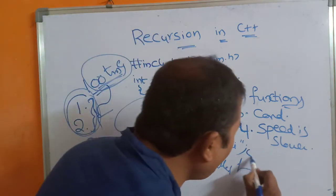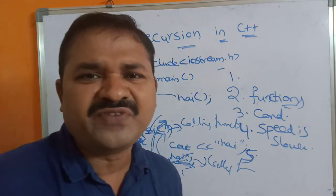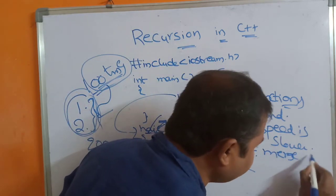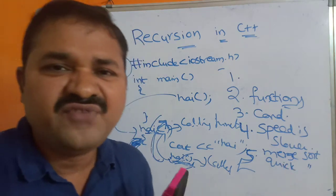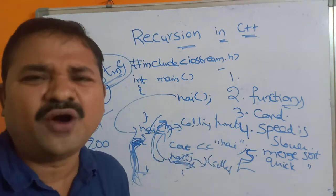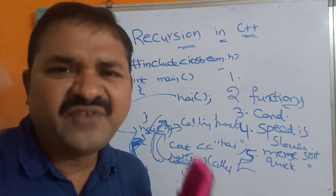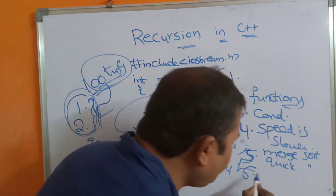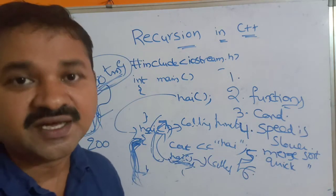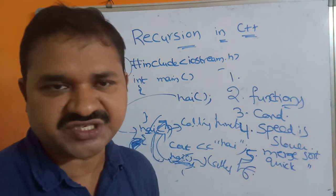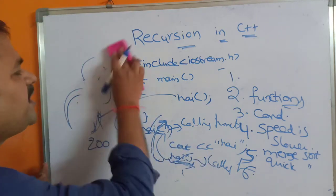So obviously the speed of the program will be reduced. However, there are some problems we can solve very easily with the help of recursion. For example, merge sort and quick sort algorithms can be implemented very easily with recursion. If you don't use recursion, it becomes quite difficult to implement these algorithms. Also, if we use recursion, the length of the program reduces — without recursion you have to type more instructions, whereas with recursion the program length is reduced.